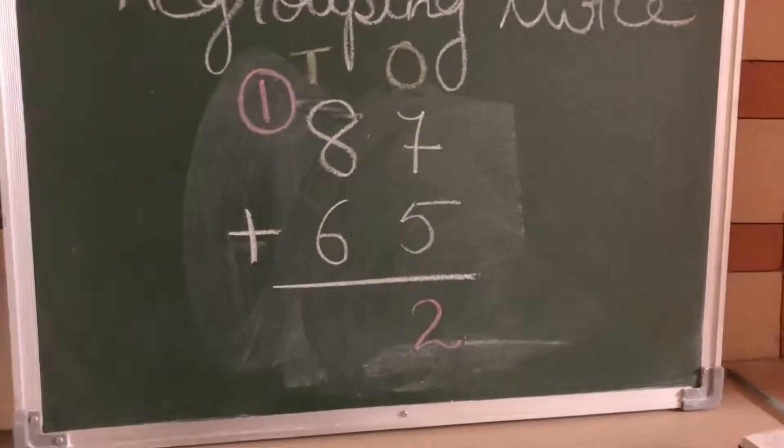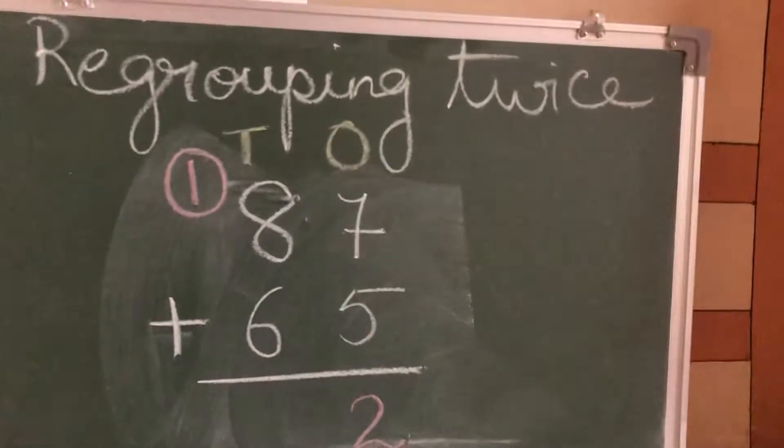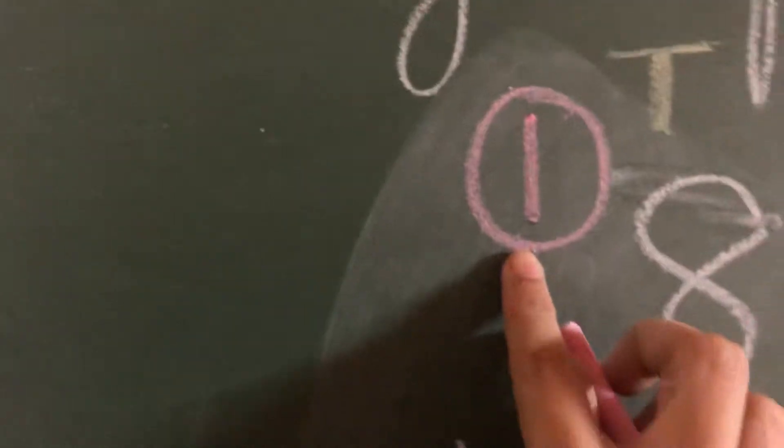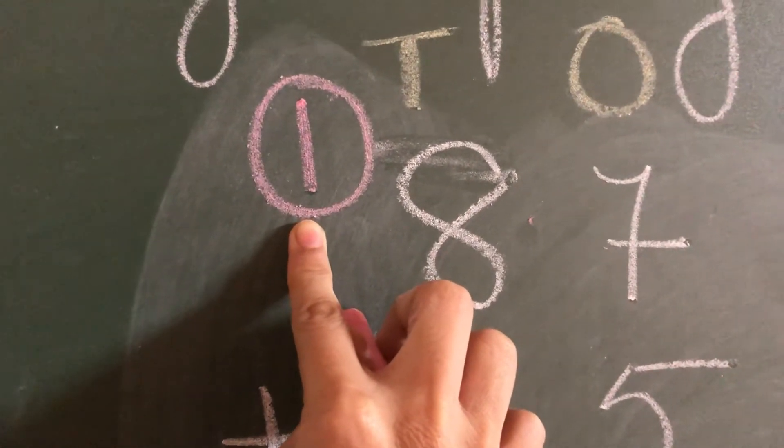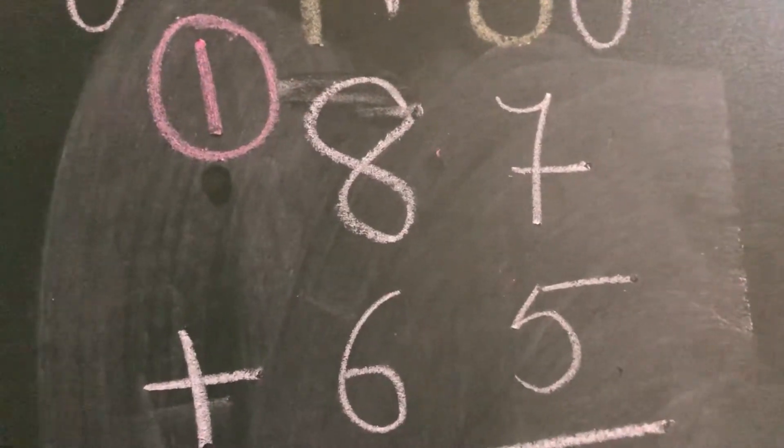Now again, 8 in your mind, 6 fingers, start counting after 8: 9, 10, 11, 12, 13, and 14. 8 plus 6, how much I got? 14. Now we also have this ten, so 14 plus 1 more we will add, that will be equal to 15.